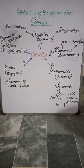Here you can see that biology has been linked to five main branches of science, which include chemistry, geography, economics, physics, and mathematics.